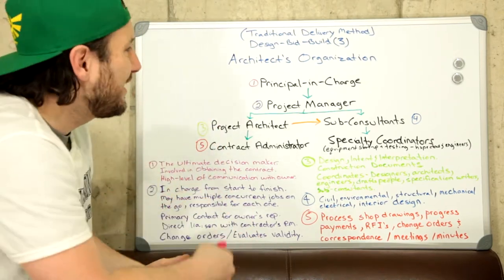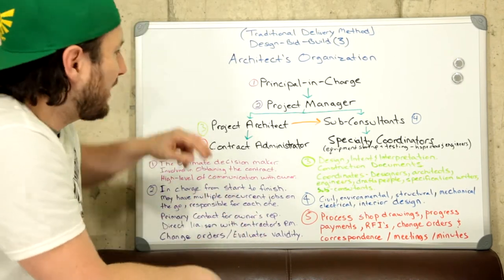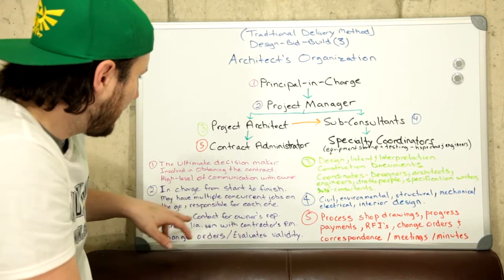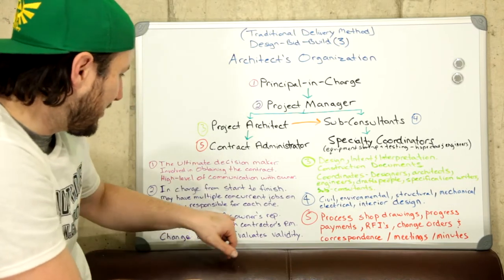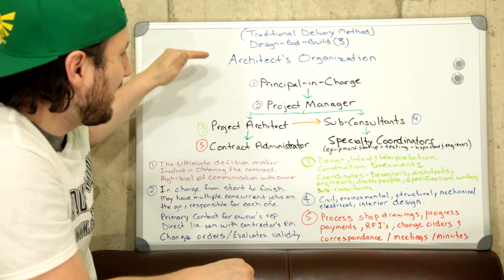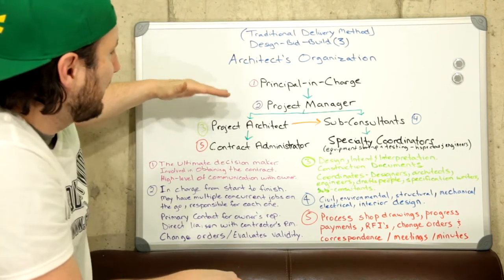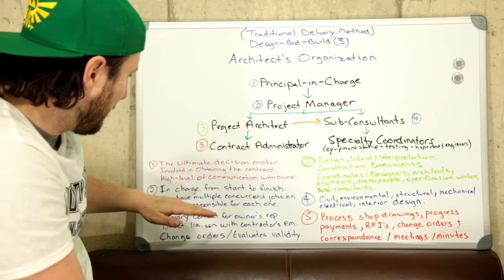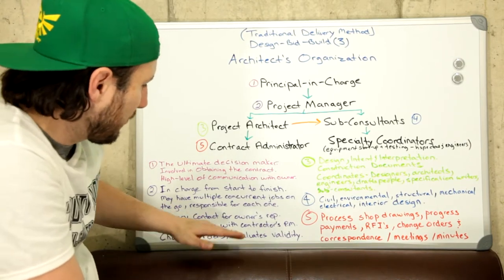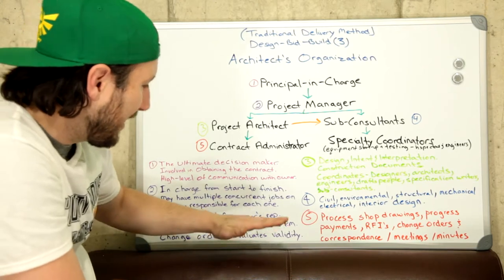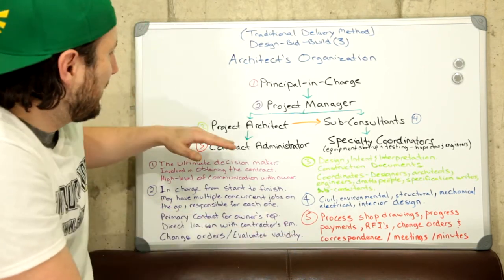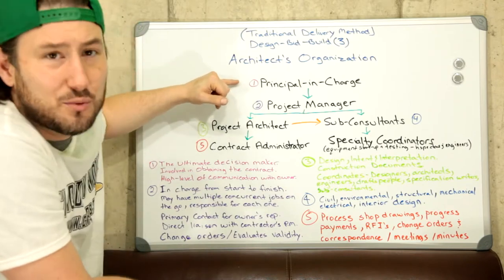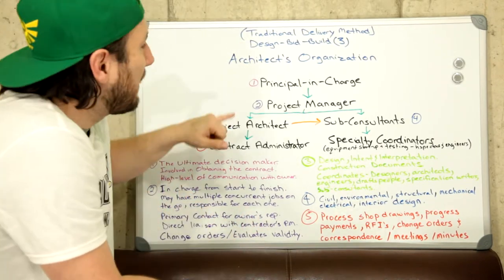The project manager works just like a project manager for a contractor — they'll have multiple jobs going on at once and are equally responsible for each job. The project manager is in charge from start to finish, may have multiple concurrent jobs, and is the primary contact for the owner's representative. They are also the direct liaison with the contractor's project manager and evaluate the validity of change orders.